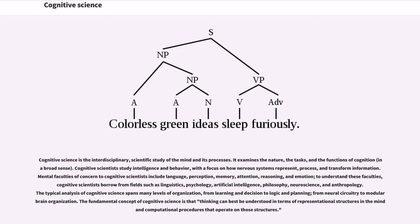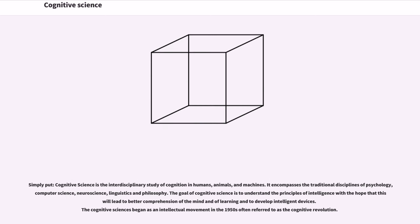The typical analysis of cognitive science spans many levels of organization, from learning and decision to logic and planning, from neural circuitry to modular brain organization. The fundamental concept of cognitive science is that thinking can best be understood in terms of representational structures and the mind and computational procedures that operate on those structures.